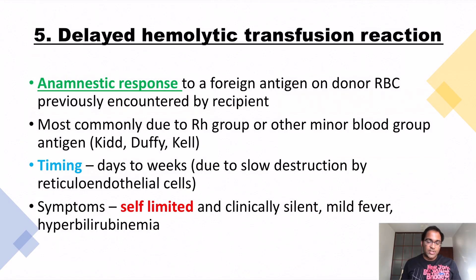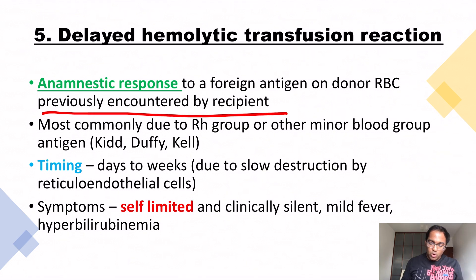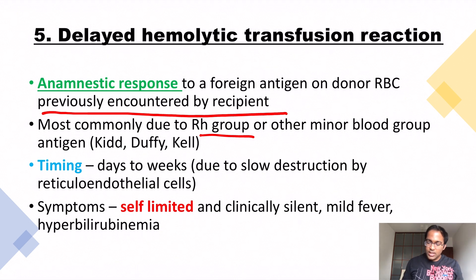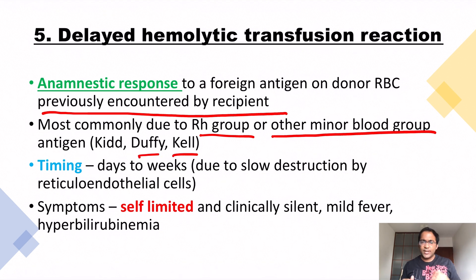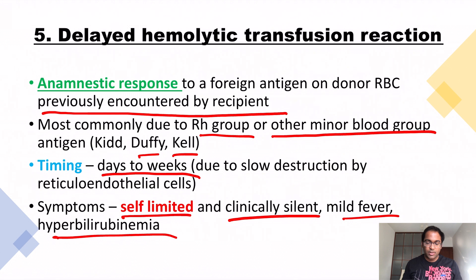The last type of reaction is delayed hemolytic transfusion reaction, where we have the anamnestic response to a foreign antigen on donor RBCs that was previously encountered by the recipient. It is most commonly due to RH group incompatibility or other minor blood groups like Kidd antigen, Duffy, or Kell antigens. The timing is days to two weeks, due to slow destruction by reticuloendothelial cells. Symptoms are usually self-limited and clinically silent — mild fever and hyperbilirubinemia.